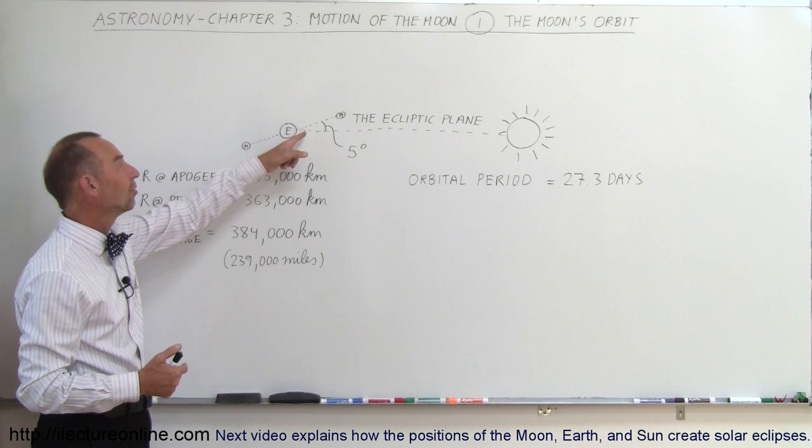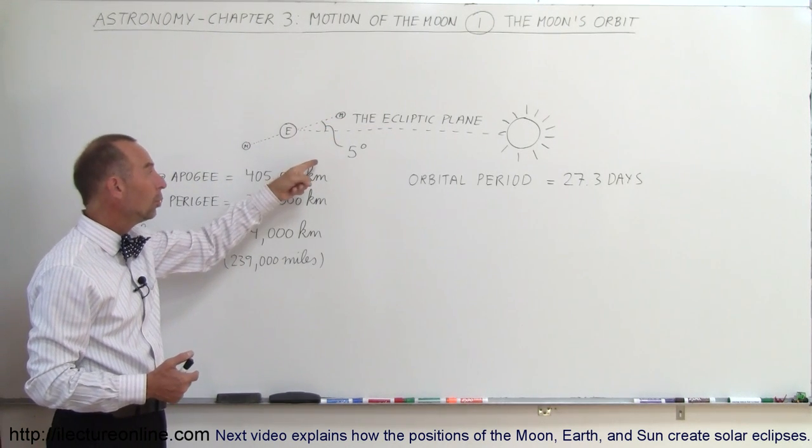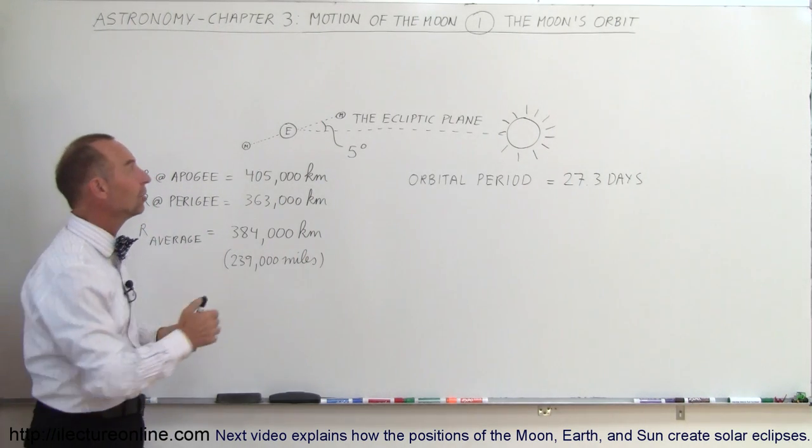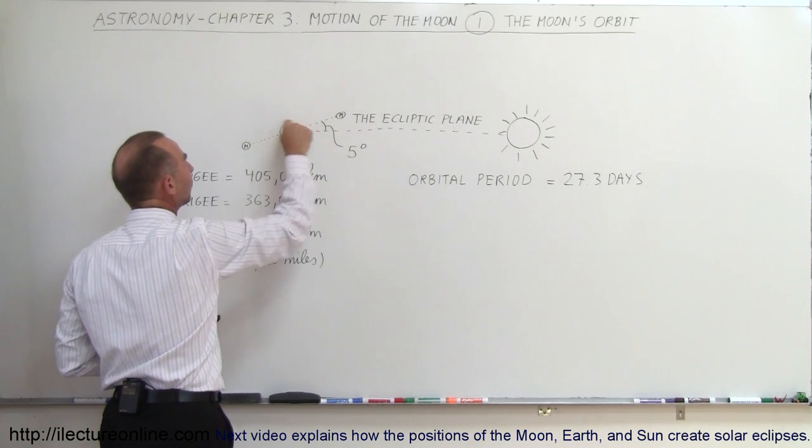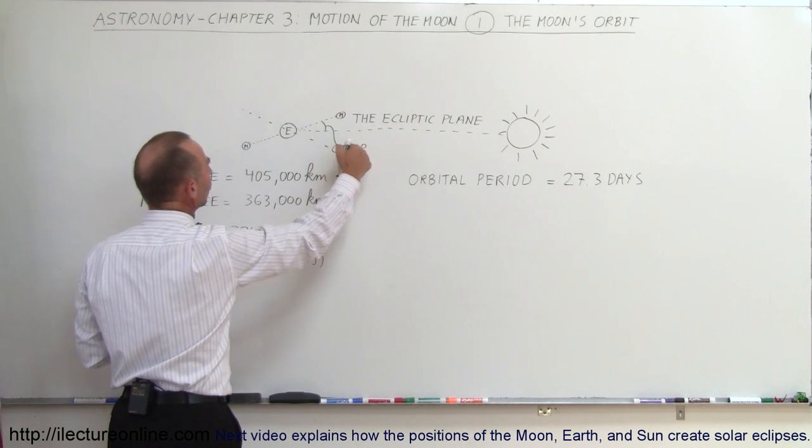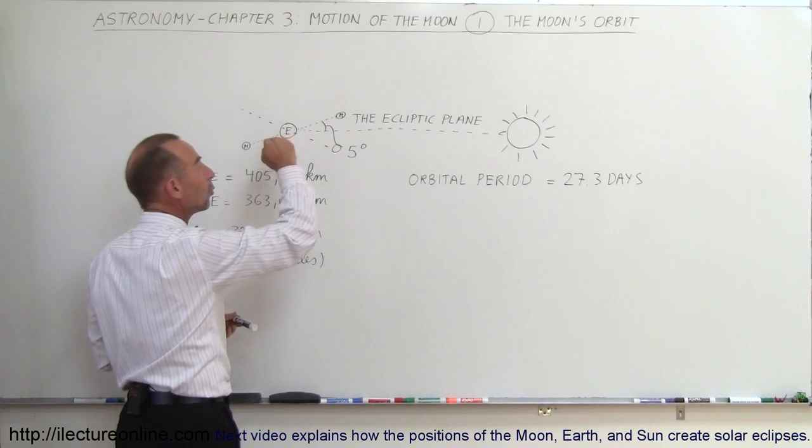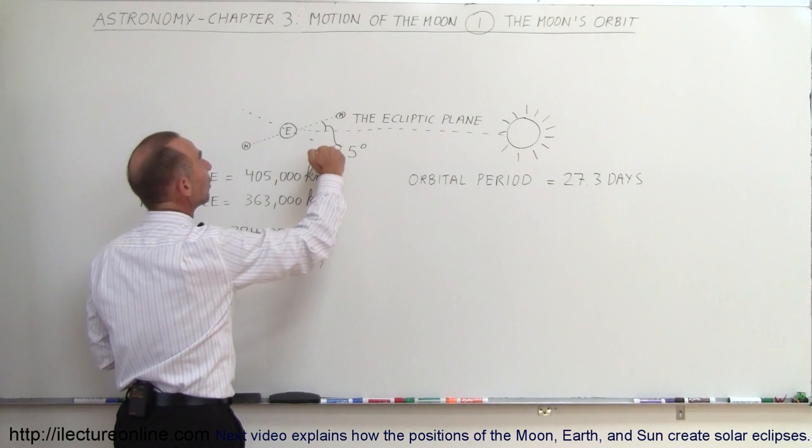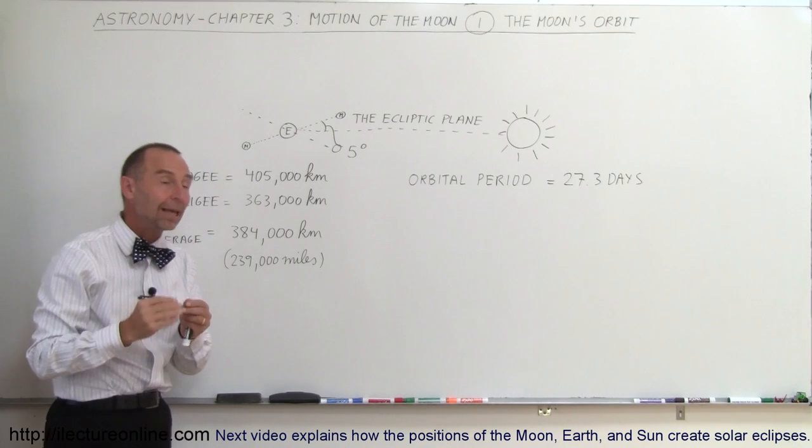And so there's a reason why that happens: most of the time the Moon will be above or below the ecliptic plane when it gets in between the Earth and the Sun, therefore not causing the shadow of the Moon to hit the Earth, but to go above the Earth. And when the orbit is like this, then of course the shadow of the Moon will hit below the Earth. But depending upon where the Earth is in its orbit, the Moon will either be above, below, and every once in a while it will be at that plane.